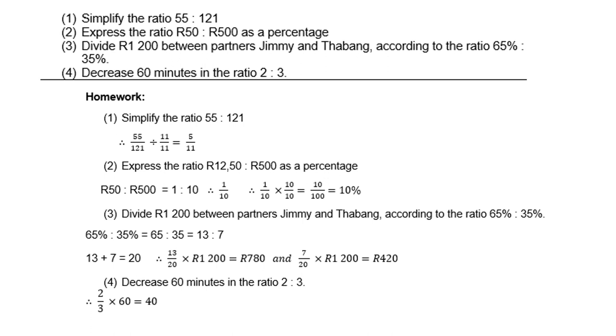Then 13 plus 7 gives you 20. So the first one for Jimmy will be 13 out of 20 times 1200, gives you R780. And then of course Thabang, 7 out of 20 times 1200 gives you R420. You can always double check your answer by adding the two values, and you should get the original 1200.